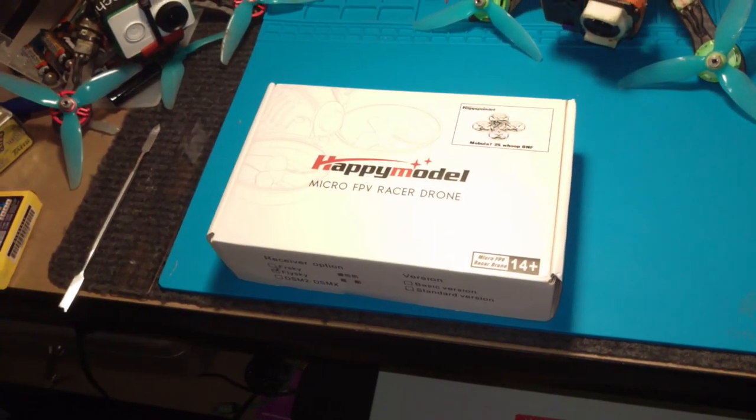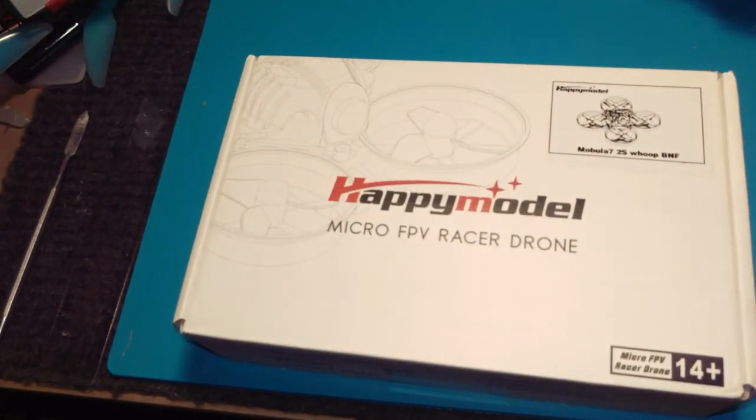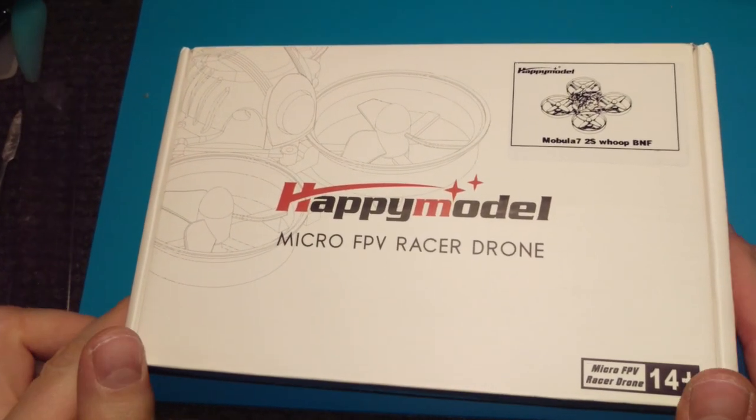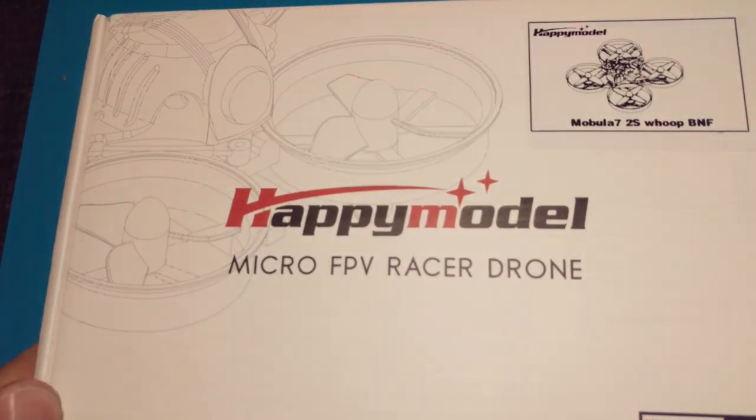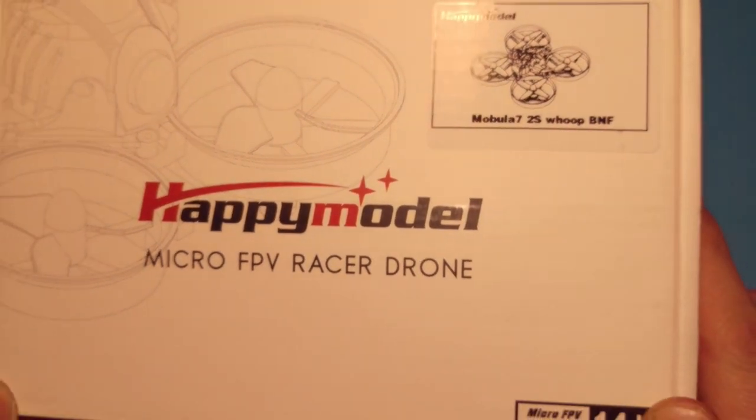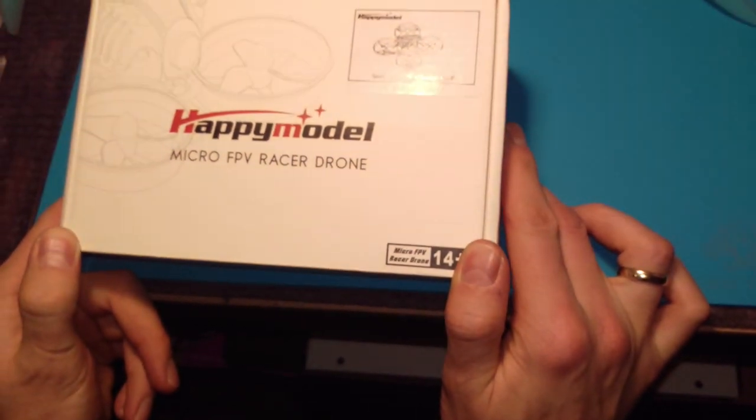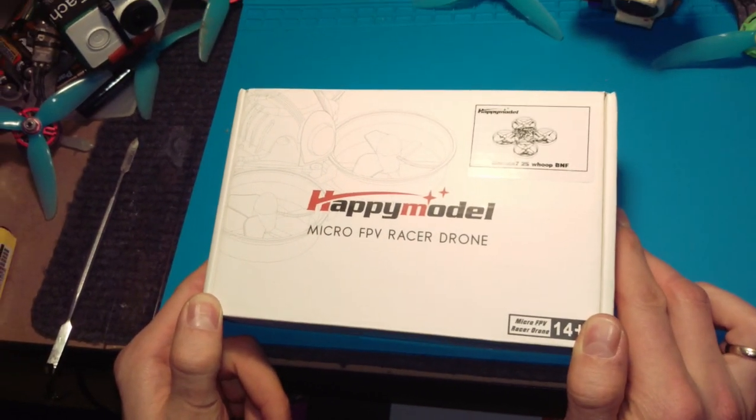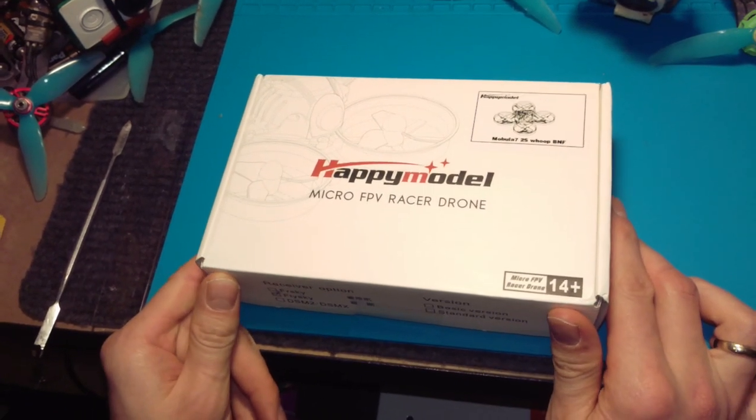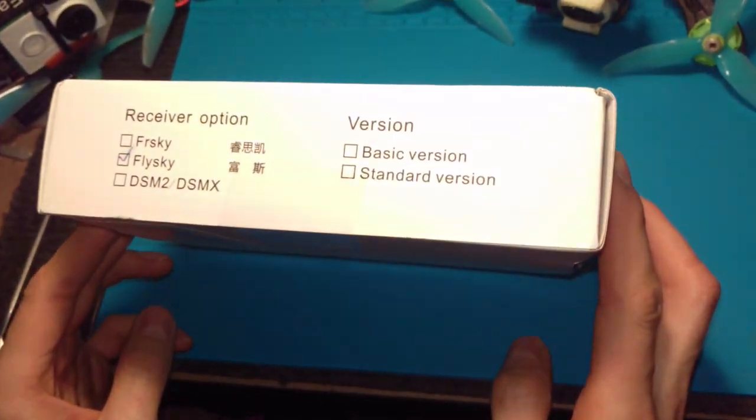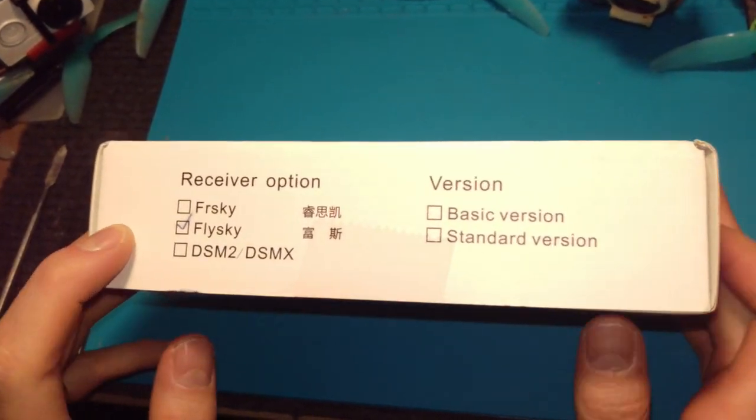Hello and welcome to my channel again. Today we've got a different video - I've just received my tiny whoop model, which is the Mobula 7. It's capable of 1S and 2S. Let's do a quick unboxing. I've got the FlyeSky version, as you can see.